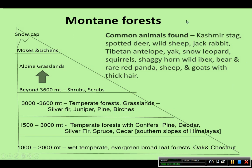Now let us discuss mountain forests. According to the height of the mountain, the types of vegetation vary. At 1000 to 2000 meters height, there are temperate evergreen broadleaf forests with oak and chestnut kinds of trees.